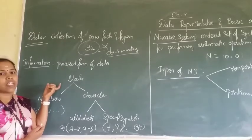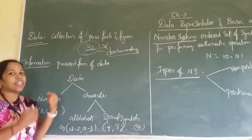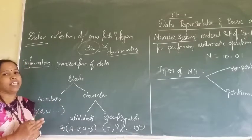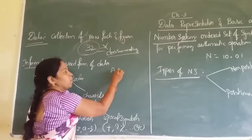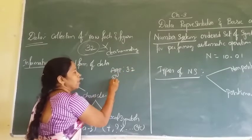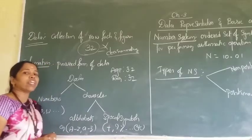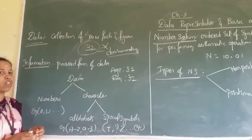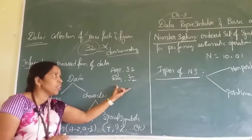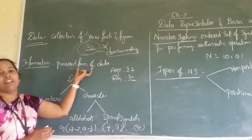When you come to information, information is nothing but the processed form of data. I am collecting the data and then processing it. For example, I am going to specify age 32 or register number 32 — that is nothing but information. So this information is very useful in decision making.